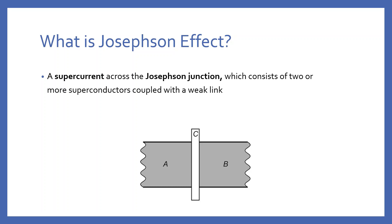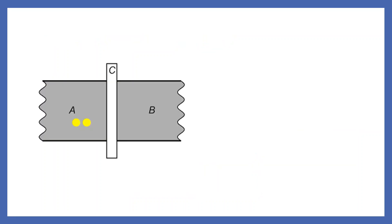Josephson effect is a supercurrent that follows indefinitely long without any voltage applied across a device known as Josephson junction, which consists of two or more superconductors coupled with a weak link. Josephson effect is the main evidence of the tunneling effect of Cooper pairs. Cooper pairs in one of the superconductors can go through the insulator to the other superconductor by tunneling. This makes the supercurrent between two superconductors.